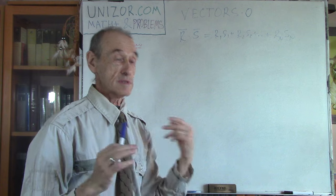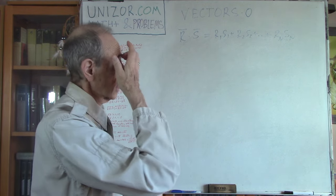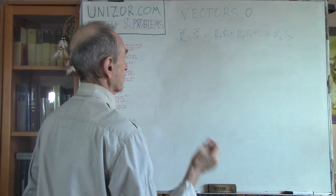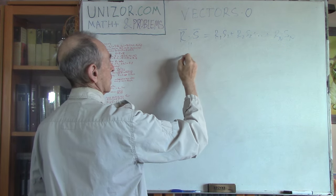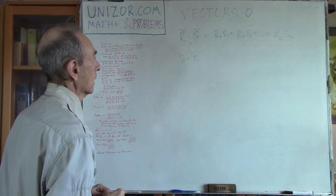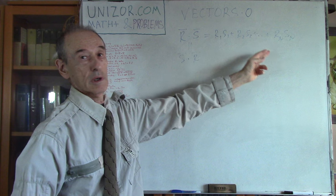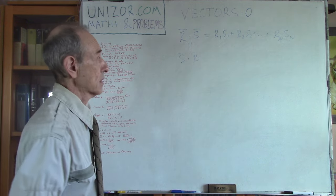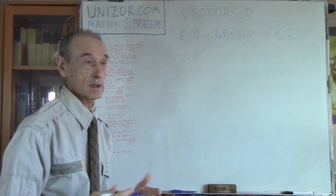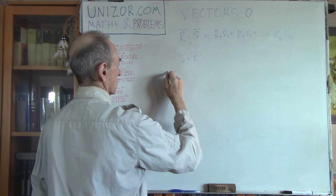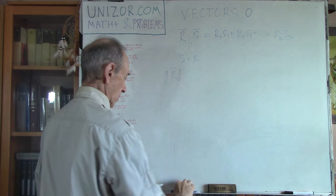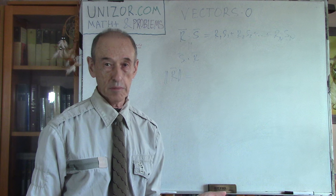Why do we do this? Because it's a very useful operation, as you will see further. The first property is, obviously, that the scalar product r·s is the same as s·r — so we have a commutative property — because changing the order of multiplication gives exactly the same numbers. Using this, we will define the magnitude of vector r.